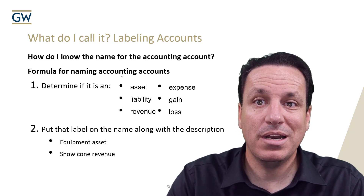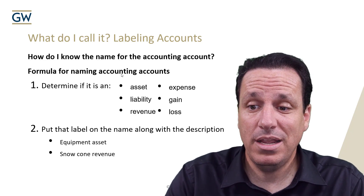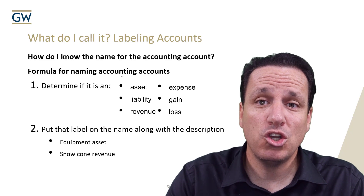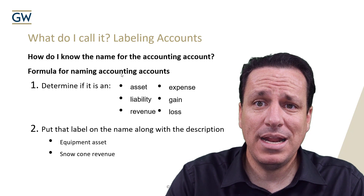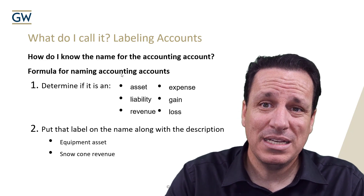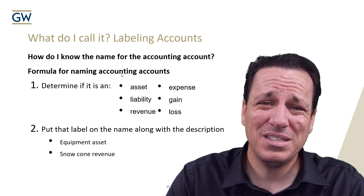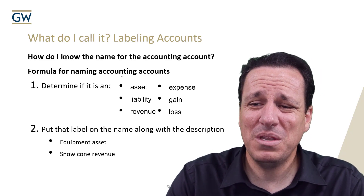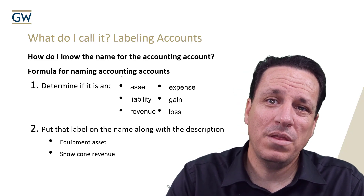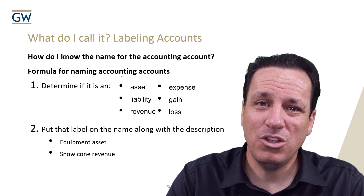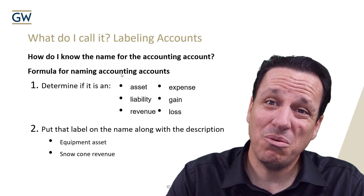If you're talking about equipment and you know it's an asset, you call it the equipment asset. If you make money from selling snow cones, you could have snow cone revenue. You know that snow cones can't be an asset because snow cones melt — they don't keep. Selling snow cones would be a revenue item. Put one of these names on there and describe the account and you'll be in a good spot. What you don't want to do is not put enough description in it.